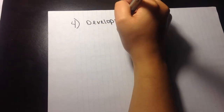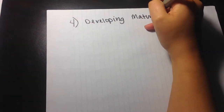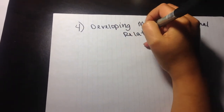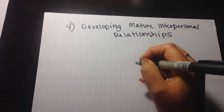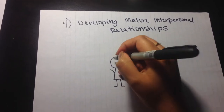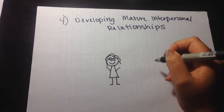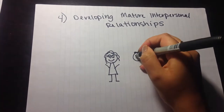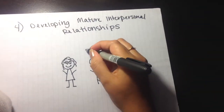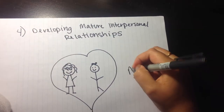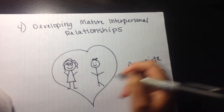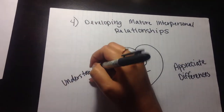The fourth vector is developing mature interpersonal relationships. In this vector, individuals become competent in maintaining long-term intimate relationships. This can mean romantic relationships or even establishing deep, meaningful friendships with friends or sorority sisters. The individual is able to appreciate differences and understand others in order to develop a mature interpersonal relationship.